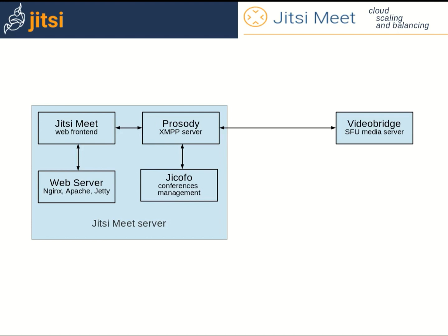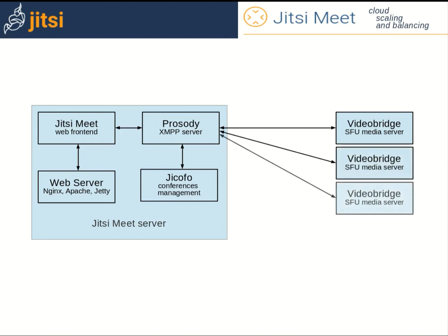All the video bridges are on separate servers. It is technically possible to run more than one video bridge process on the same machine, but it beats the purpose unless it is a very, very big server. Having all video bridges on separate machines also makes the scaling easier and also cheaper if you are paying for cloud services, since unneeded bridges are stopped and you pay only for what you are really using.